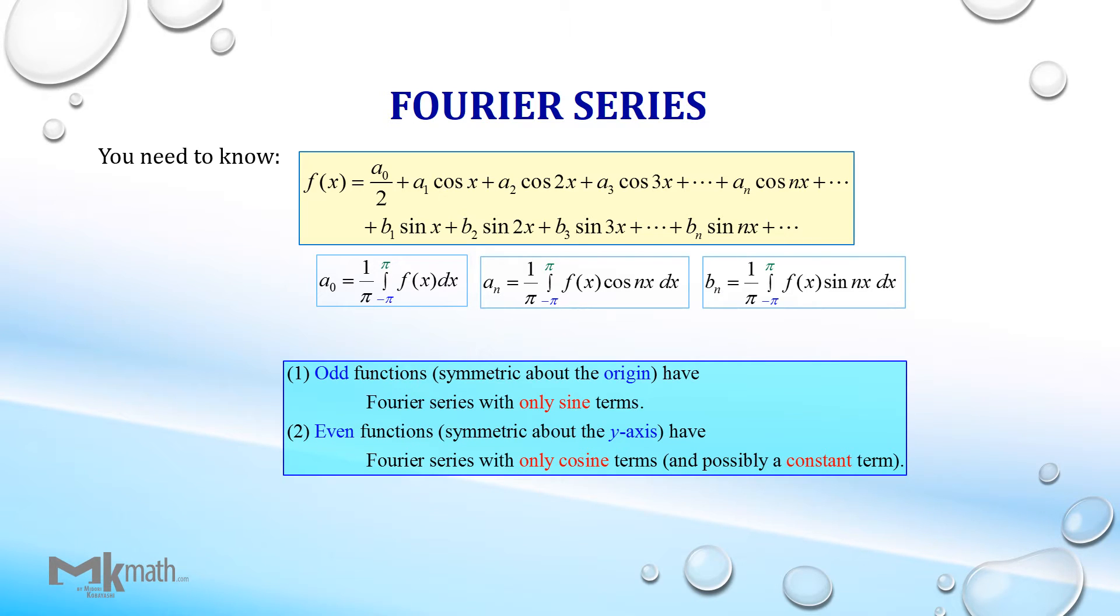Odd functions have Fourier series with only sine terms, which means that you only find the coefficients b's in the formula. Even functions have Fourier series with cosine and possible constant terms, which means you only find the coefficients a's in the formula.